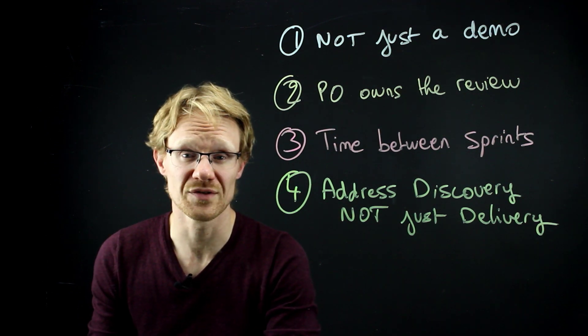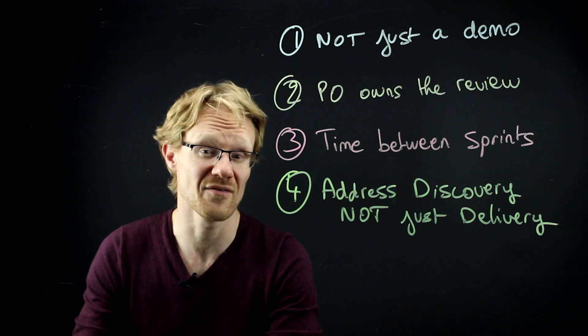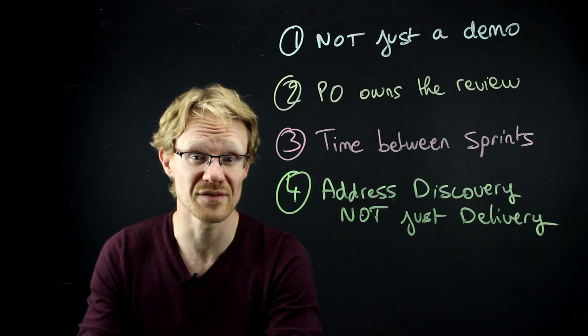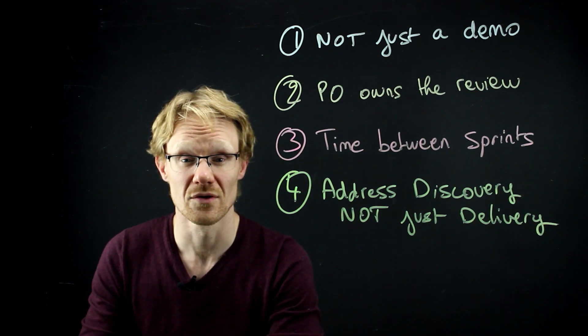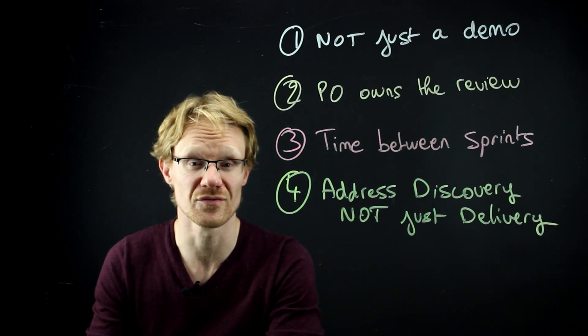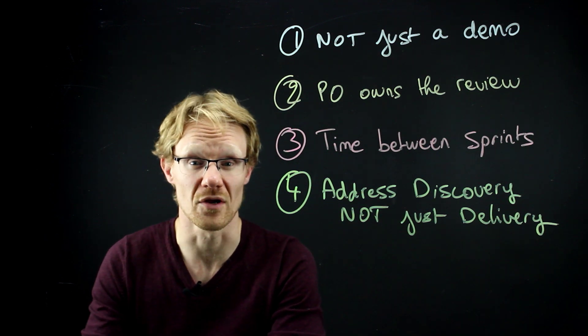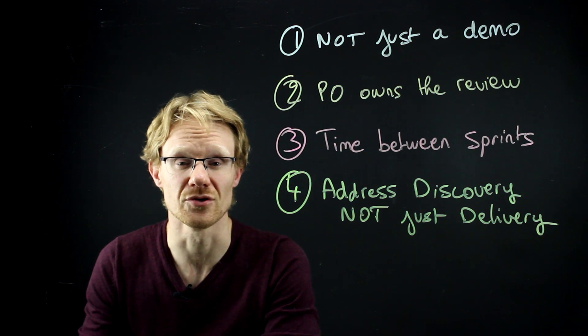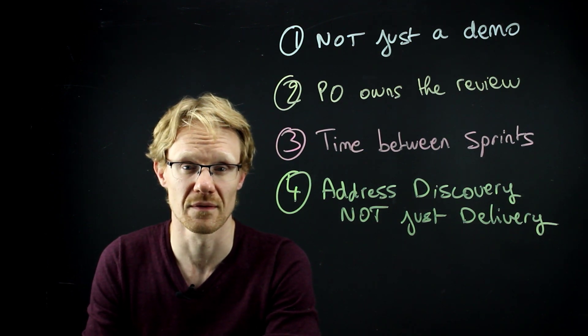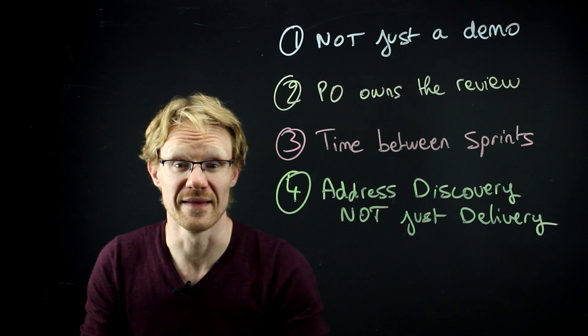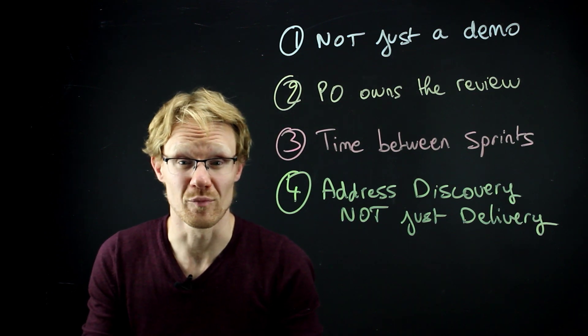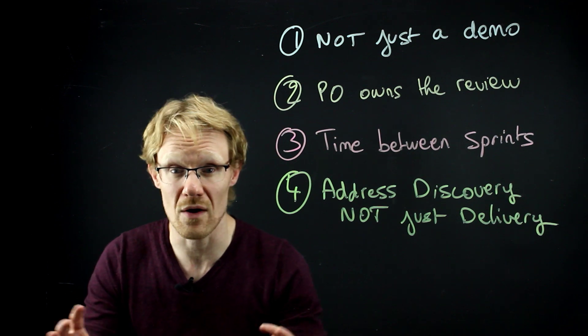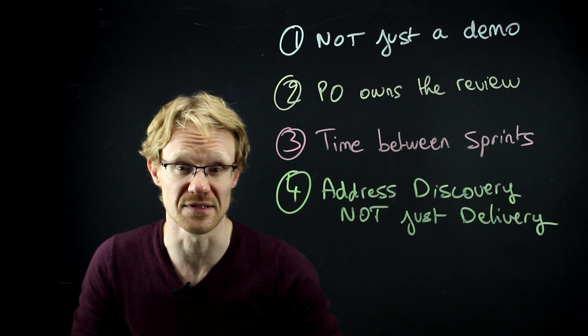So what does that mean for the sprint review and getting feedback? Well, people always talk about what they've implemented, what they haven't implemented, what they'll implement next. But they never talk about the discovery work. So do that at the sprint review. Show the things you've tried, show the things you've learned, show the experiments you've been running. Show what you've tried and learned and show the results of that. And show what you'll try next. If your stakeholders are kind of product people who like to innovate and try new things and wow their users, they'll love hearing about discovery activities.